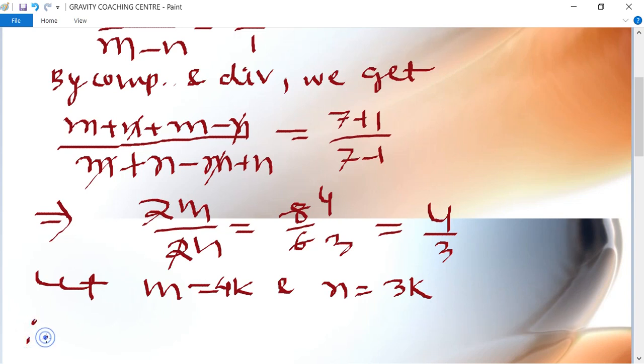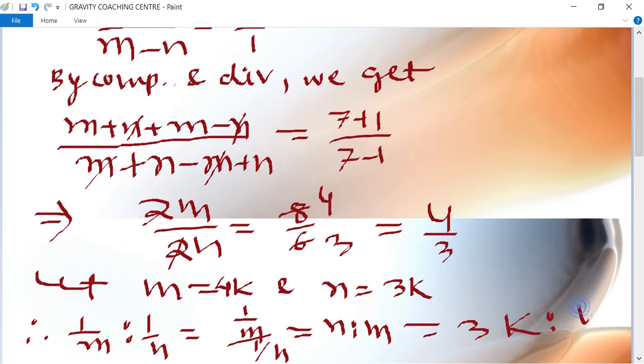Therefore, 1 upon m ratio 1 upon n equal to 1 by m upon 1 by n equal to n ratio m. Therefore 3k ratio 4k equal to 3 ratio 4, which is the answer.